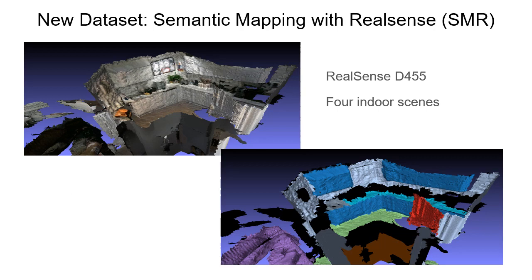To understand the cross-sensor generalization ability of different semantic mapping methods, we collected a full-sequence RGBD indoor dataset captured using RealSense D455. Meshes are manually annotated with semantic labels in consistency with ScanNet. In the next few slides, we will show some experimental results.